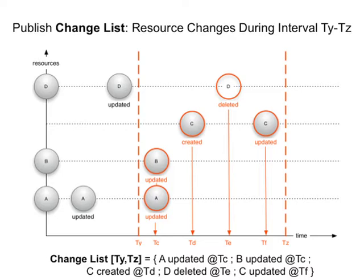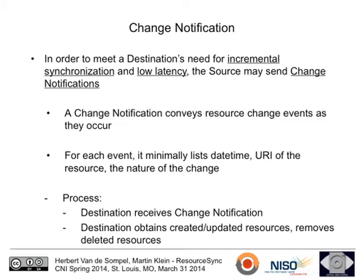Looking at the evolution of the source's resources: the source publishes a change list covering all changes between time ty and tz. It would contain: A and B updated at time C, a new resource created at time D, one deleted, and one updated. Pay close attention — the same resource can occur twice in the change list if it changed twice within the interval. The change list notifies about every single change to a resource, which is important for certain use cases.